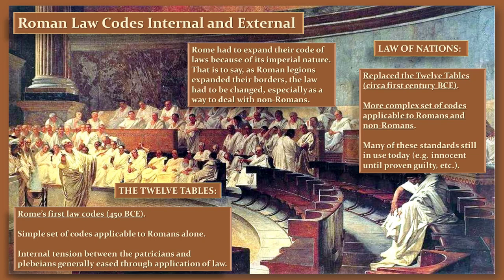At just about the time we see the birth of Jesus of Nazareth, Rome is going to begin to move from its period of Republic to its period of Empire, and with that they will replace the Law of Twelve Tables with the Law of Nations. The Law of Nations, while a more complex set of codes, was made applicable to Romans and non-Romans alike. As Rome moved in and conquered other peoples' lands, applying the law equally to non-Roman citizens helped win hearts and minds, making it easier for Rome to administer and control conquered regions.